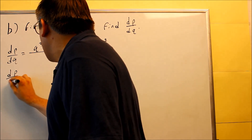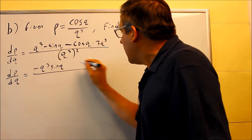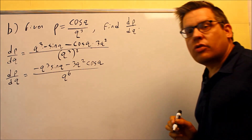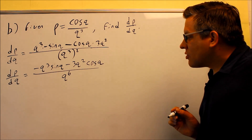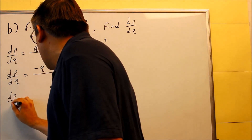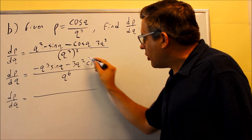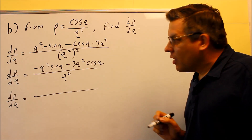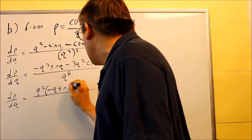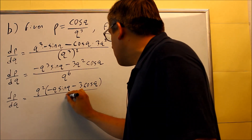Next we're going to do some simplifying — we're done with the quotient rule, so now it's just algebra. We have negative Q cubed sine Q minus 3Q squared cosine Q on top. On the bottom, when you raise a power to another power you multiply exponents, so you get Q to the sixth. The only thing we can do to simplify is factor out a like term. I can see a Q below, so I'll factor out a power of Q from the top. The lowest power I can pull out is Q squared, leaving negative Q sine Q minus 3 cosine Q inside, all over Q to the sixth.